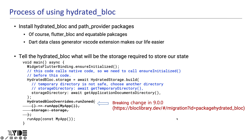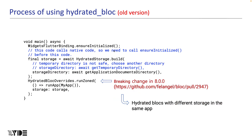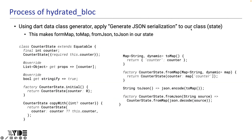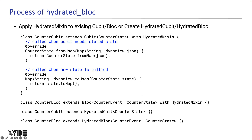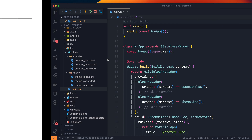Next, apply the JSON serialization of the .DataClass generate extension to the state class to create fromMap, toMap, fromJson, and toJson functions. Next, if a cubit or bloc has already been created, apply HydrateMixin; and if newly creating one, extend HydrateCubit or HydrateBloc. At this time, fromJson and toJson must be overridden. fromJson is used when the stored state is needed, and toJson is used when a new state is emitted. Now we are ready to go.